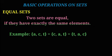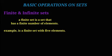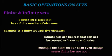Equal sets: two sets are equal if they have exactly the same elements. Finite sets are sets with a definite number of elements — for example, a finished set with five elements. Infinite sets are sets that cannot be counted — they have no end value. For example, the hairs on our head, even though they seem finite, are considered an example of a very large count.